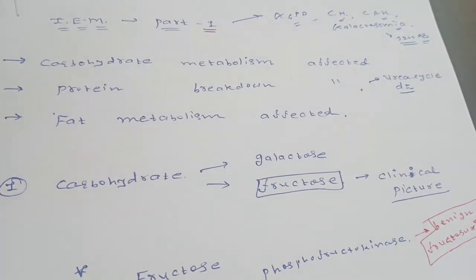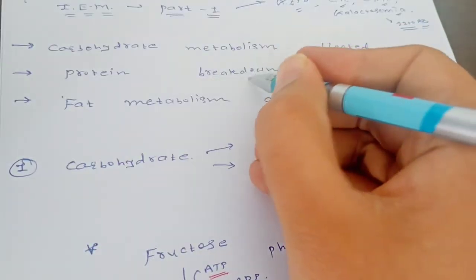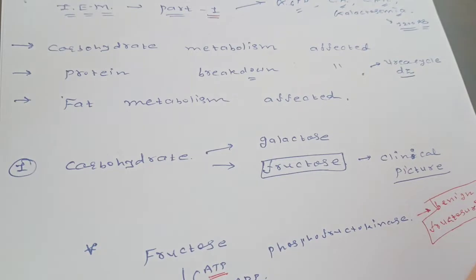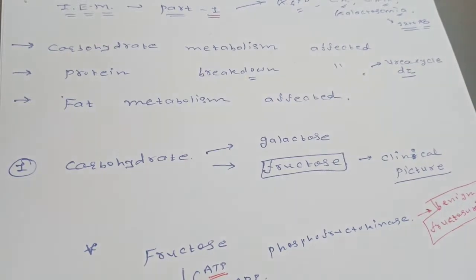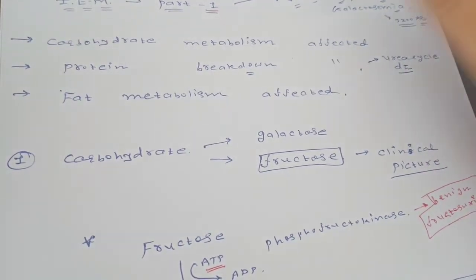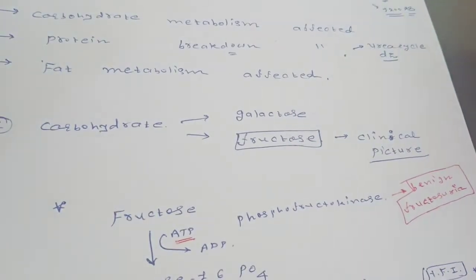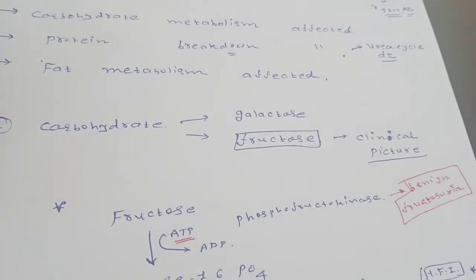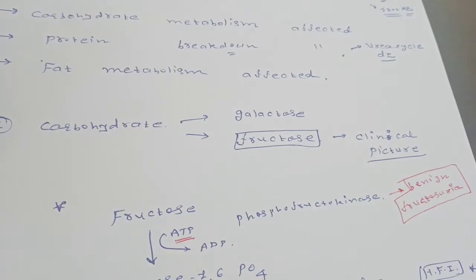Basically, they are dividing into three types: defects in the carbohydrate metabolism, defect in the protein breakdown, and defect in the fat metabolism. Let us start with the first topic, which is carbohydrate metabolism, and seeing the response of this video, we will cover all the rest of the parts. In carbohydrate metabolism, there are basically two types.